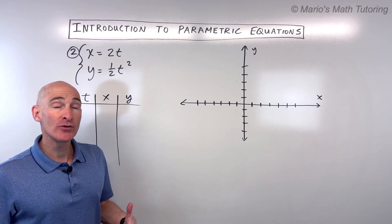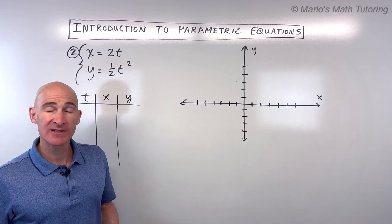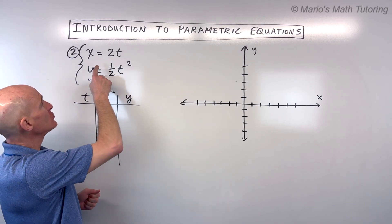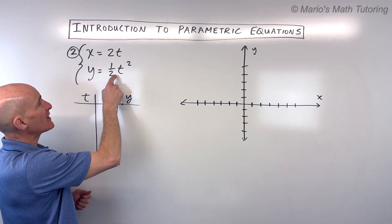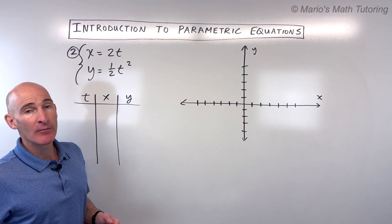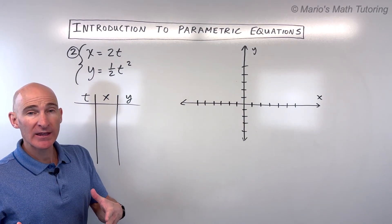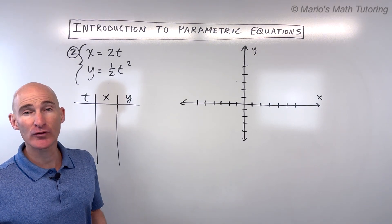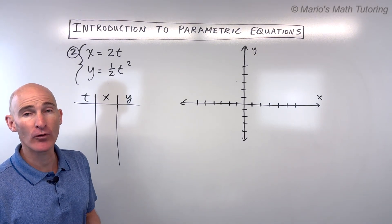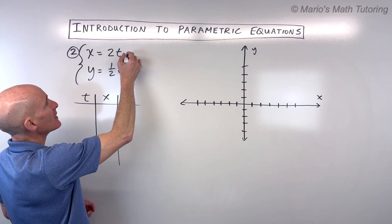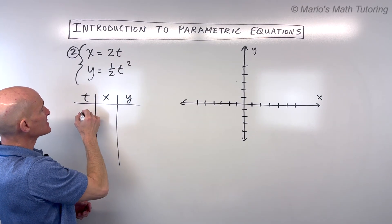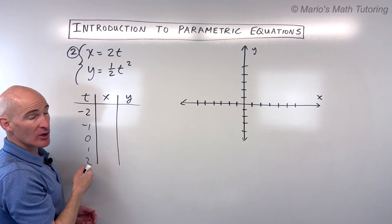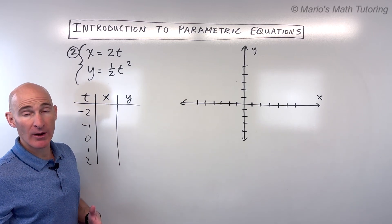If you want to pause the video and try this second example on your own, go ahead. We've got these two equations again in terms of our parameter t. We want to get a good sketch of this graph, and then eliminate the parameter and write it in rectangular form or xy form. Let's plug in some values for t — a couple negative, zero, a couple positive. Again, sometimes you have to watch out for restrictions on the domain.